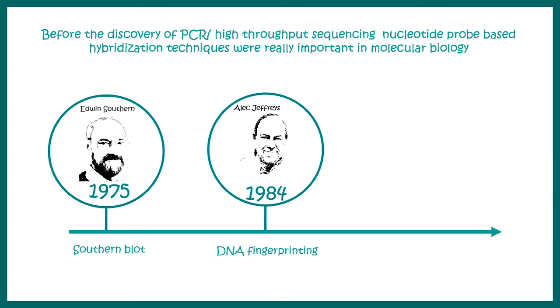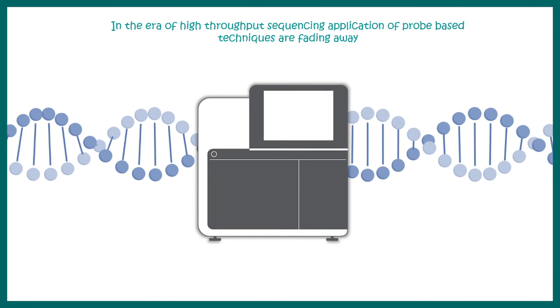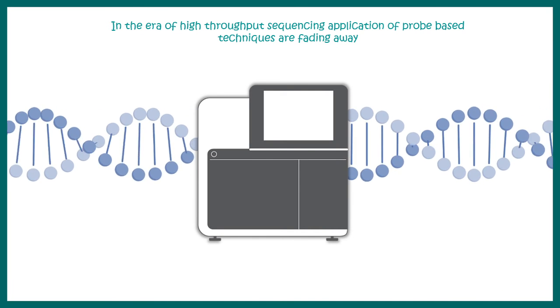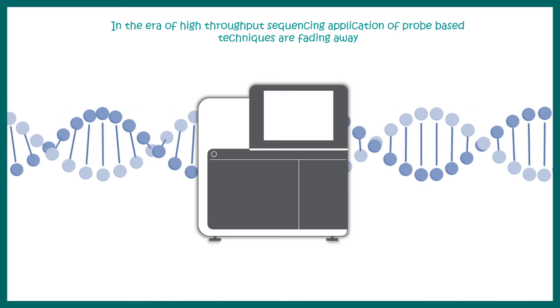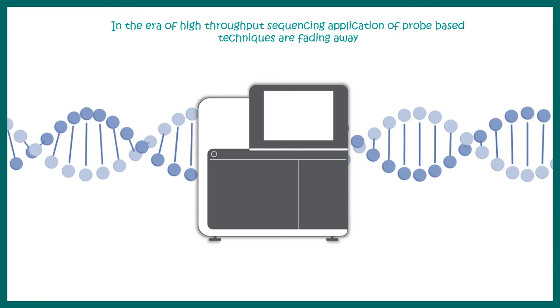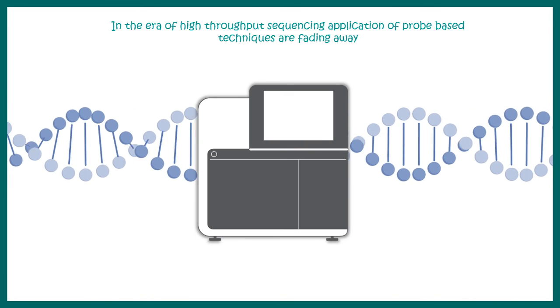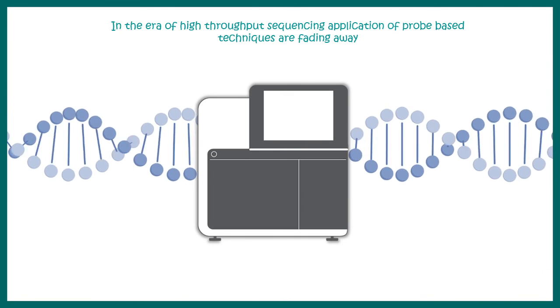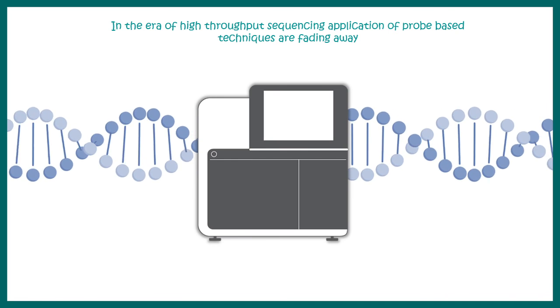Let me tell you that before the discovery of PCR or high-throughput sequencing, nucleotide-based probes or these kind of probe-based techniques were key aspects in molecular biology. Southern blot, which was discovered in 1975, and DNA fingerprinting, which was discovered in 1984, all utilized these probe-based methods. These days, we have high-throughput sequencers which can tell us the sequence of a nucleotide region in a blink of an eye. So in this particular era, we might think that DNA probes or RNA probes are irrelevant. But still, let me tell you,